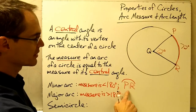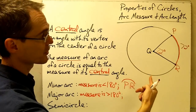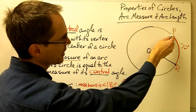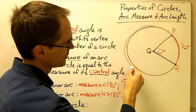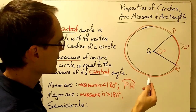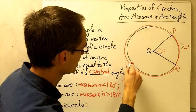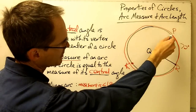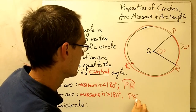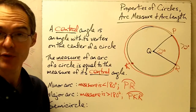A major arc is an arc whose measure is greater than 180 degrees. For major arcs, in order to label the arc, you need three letters or three points on the circle. Arc PR is a minor arc. If I wanted to look at the other piece of the circle — the one that goes all the way around the other way — I would need another point on the arc. Let me add a point here and call it K. So now I can talk about this major arc, PKR.